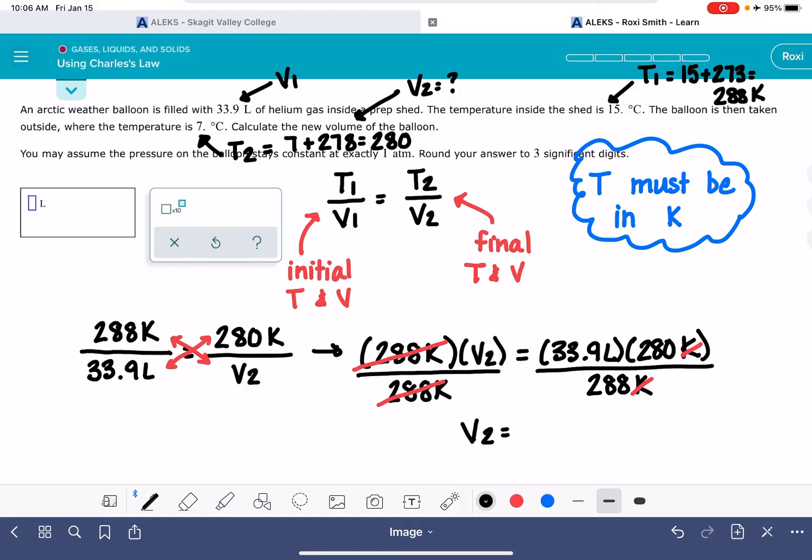And we are just left with solving for V2. So 33.9 times 280 divided by 288 gives us 32.96 liters.